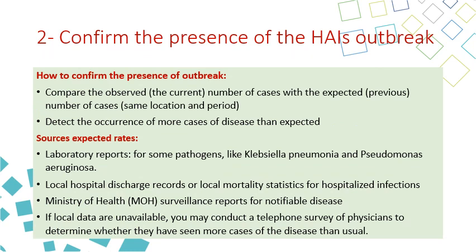The second step of the initial outbreak is to confirm the presence of hospital-acquired infections. To confirm the presence of an outbreak, compare the current observed number of cases with the expected previous number of cases at the same location and period, and detect the occurrence of more cases of disease than expected. Sources for expected rates include laboratory reports for some pathogens like Legionella pneumophila and Pseudomonas, local hospital discharge records, or local mortality statistics for hospitalized infections. Surveillance reports for notifiable diseases from the Ministry of Health may also be used. If local data are unavailable, you may conduct a telephone survey with physicians to determine whether they have seen more cases of disease than usual.